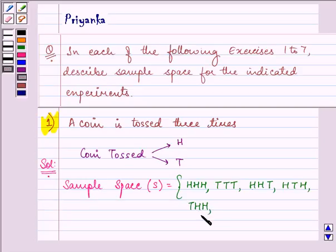Now again, there is a possibility that we will get 2 times tail and 1 time head, that is, in the first time tail, then tail and then head or tail head tail or head tail tail.